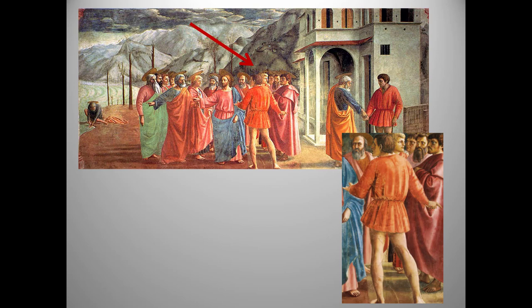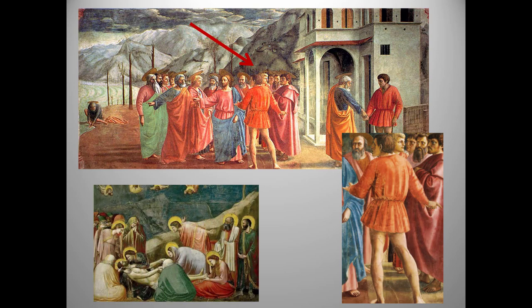Like Giotto, Masaccio uses a figure with his back to us to draw the viewer into the painting. The man in the orange doublet with bare legs is a stand-in for us, the viewer. The fully modeled figures have volume and weight, further defined by shading and chiaroscuro. But now we're seeing more musculature — the bare legs help.